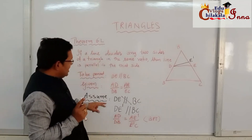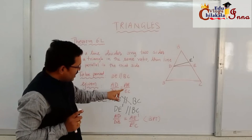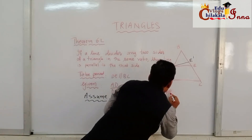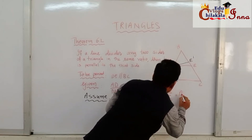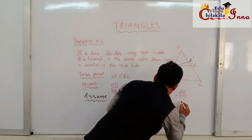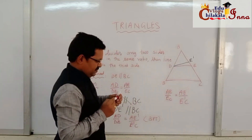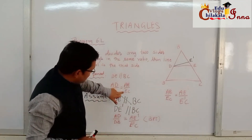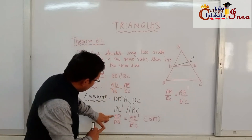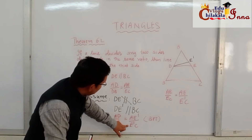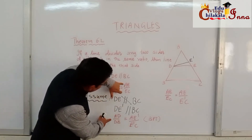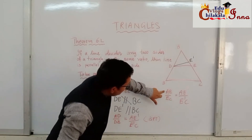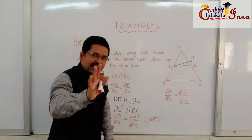But the given condition is AD/DB = AE/EC. And by BPT we have AD/DB = AE'/E'C. Combining these two results, we can write: AE/EC = AE'/E'C.